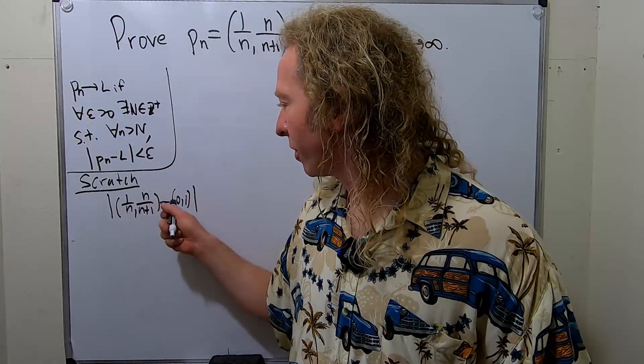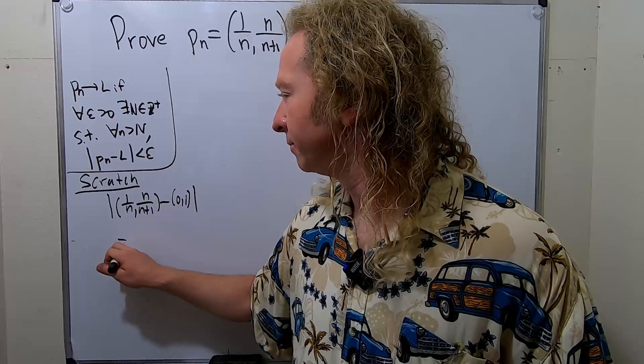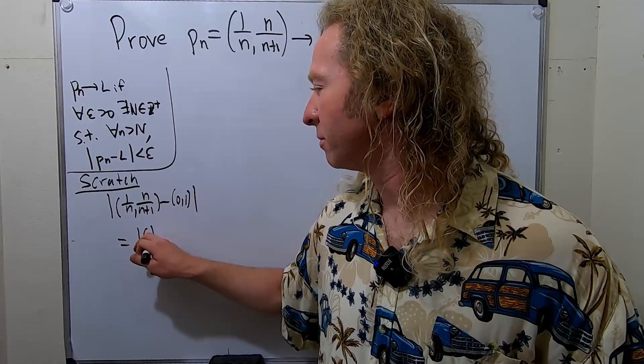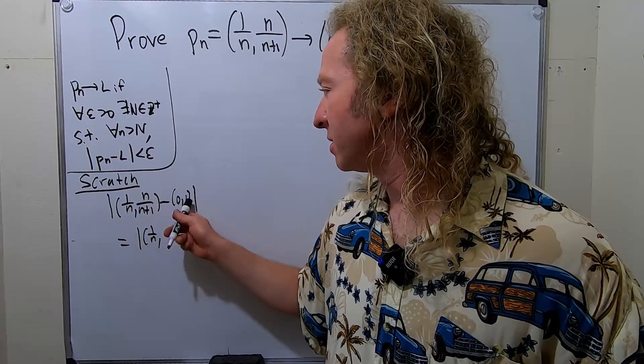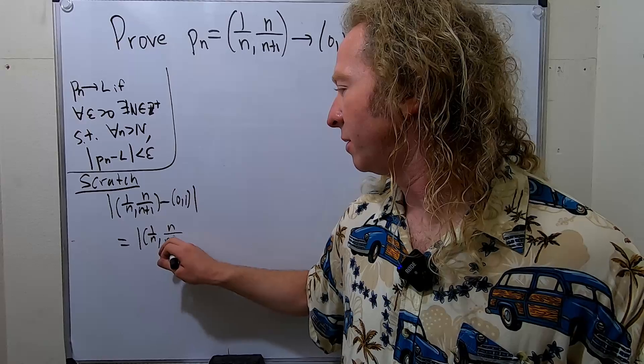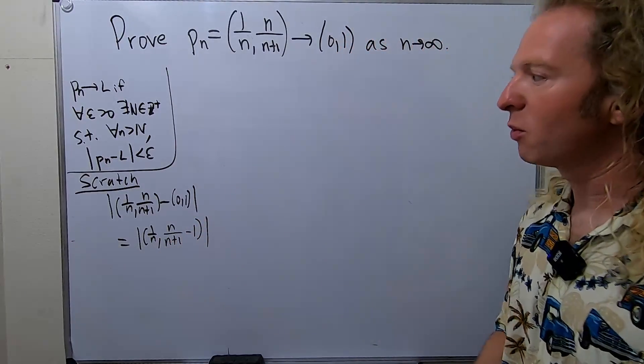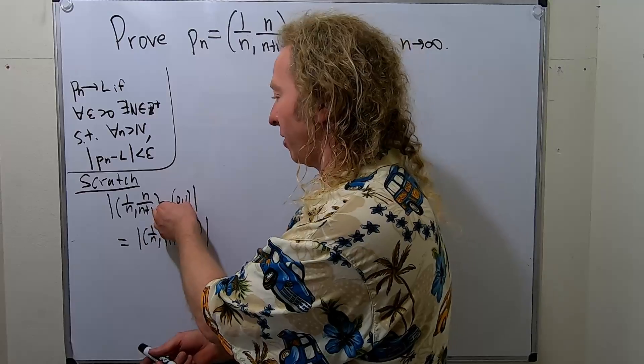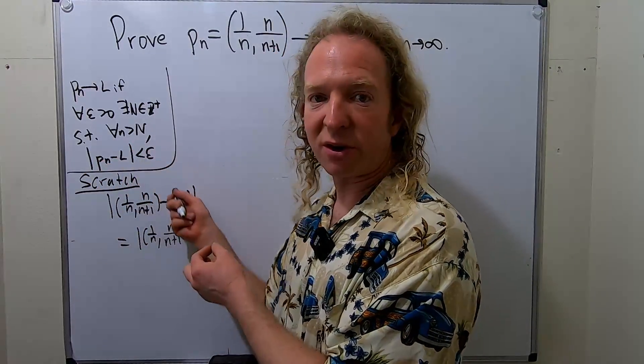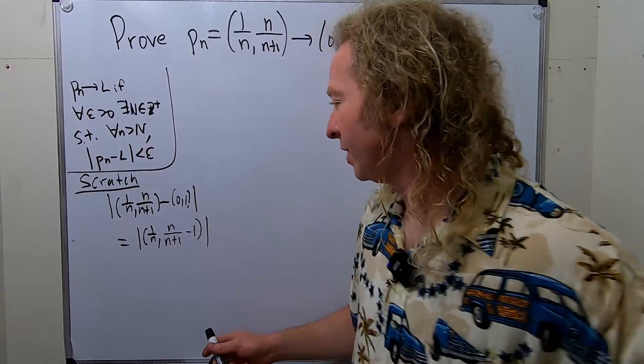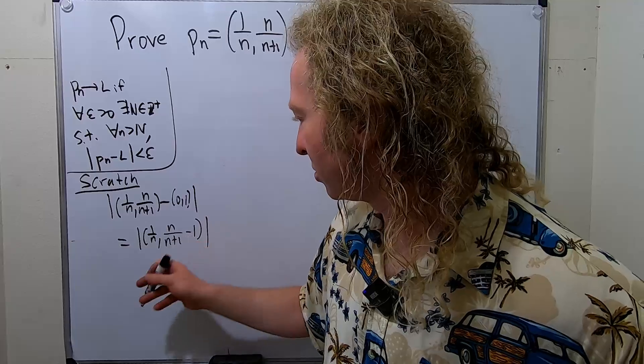So if you subtract this, 1 over n minus 0, you get 1 over n. I like these problems. And this minus this would be n over n+1 minus 1. So far, we want this to be less than epsilon, right? This is our L. The goal is to make it less than epsilon.